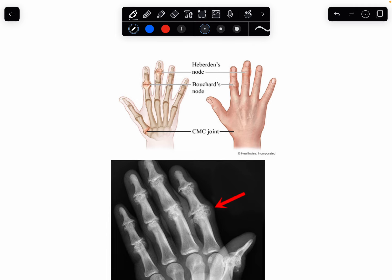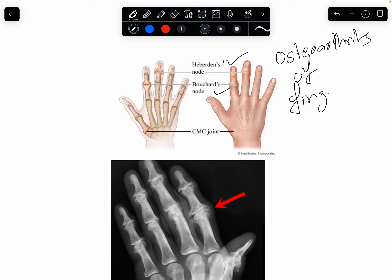You can see both of these nodes — the Heberden's node and the Bouchard's node — which are caused by osteoarthritis. The osteoarthritis of the finger joints gives rise to the formation of these nodes.